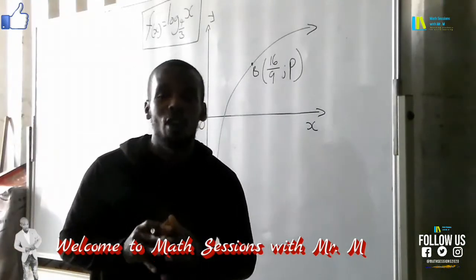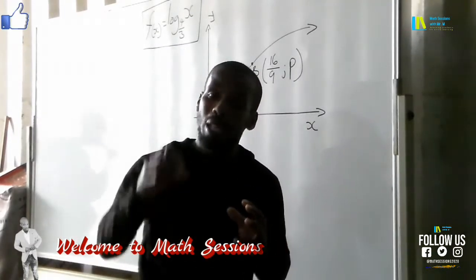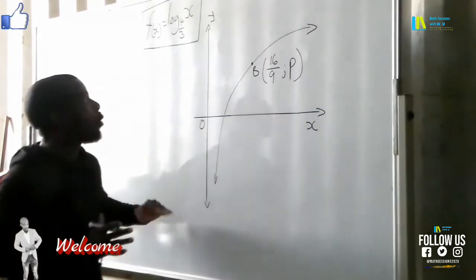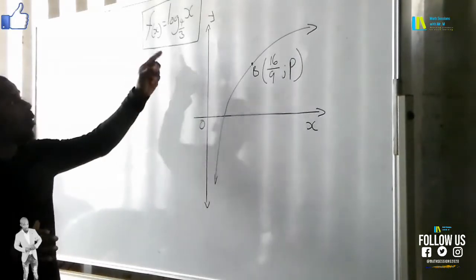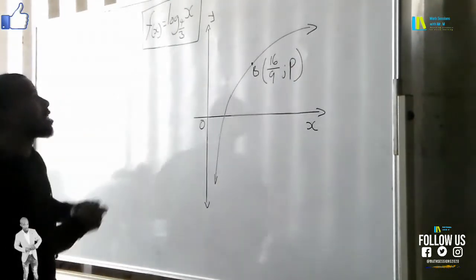It's easy to find those kinds of points where there is an unknown value in a certain point. Now we have this graph that is f(x) is equal to log base 4/3 of x. In fact, the log of x base 4/3 is 4/3.